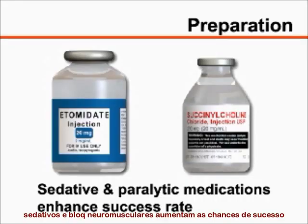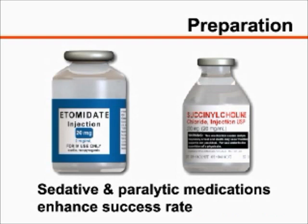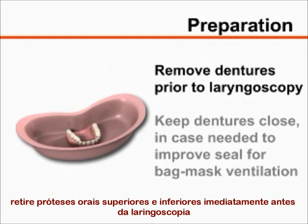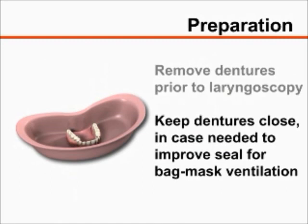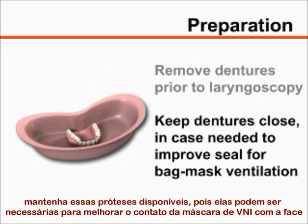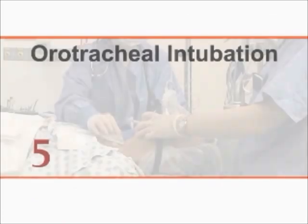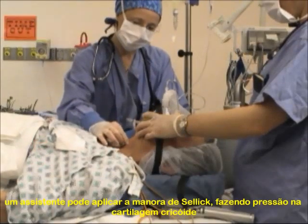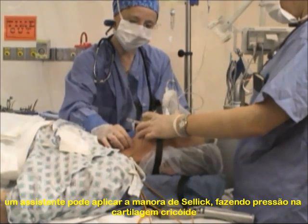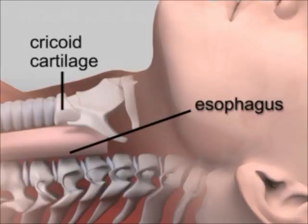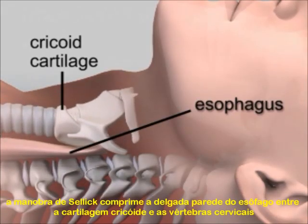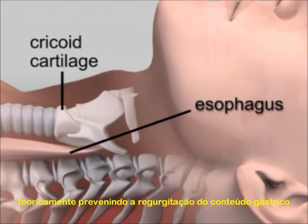The use of sedative and paralytic medications greatly enhances the success rate of endotracheal intubation; however, their use is beyond the scope of this video. Remove the patient's upper and lower dentures if present immediately prior to laryngoscopy. Keep the dentures close at hand so that they may be rapidly reinserted to improve the mask seal if bag mask ventilation is required. An assistant should apply the SELIC maneuver by applying firm pressure to the cricoid cartilage, which compresses the soft wall esophagus between the cricoid cartilage and the cervical vertebrae, theoretically preventing passive regurgitation of gastric contents.